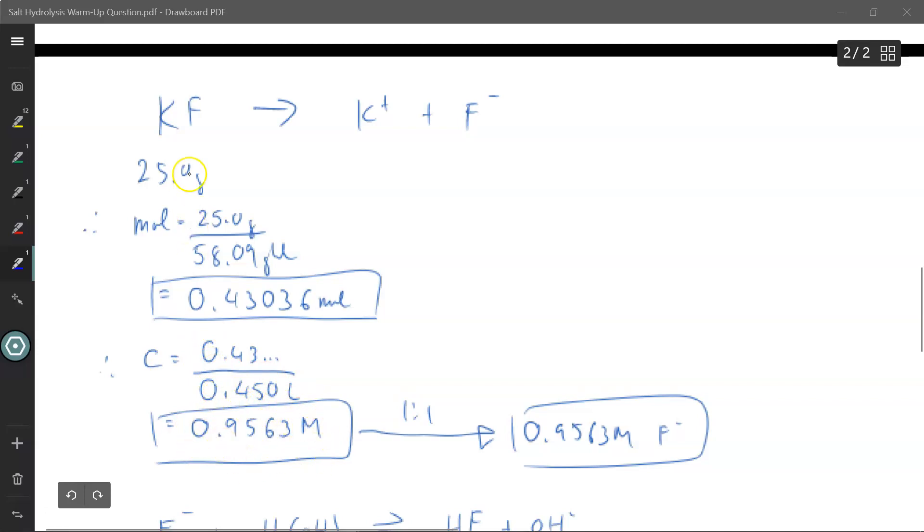Since the final solution volume remains 0.450 liters, concentration is moles divided by volume, you now have the molar concentration of your potassium fluoride. The ratio of potassium fluoride to fluorine is one-to-one, so the concentration is the same. Notice how I don't care about the potassium because the potassium is my spectator ion. It will have no effect upon pH.